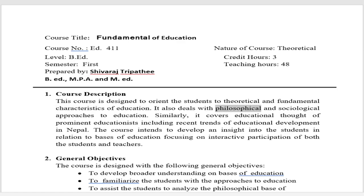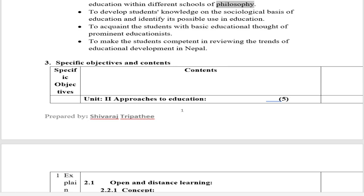The course also deals with philosophical and sociological approaches to education. Similarly, it covers educational thought of prominent educationists including recent trends of educational development in Nepal. The course intends to develop insight into students in relation to bases of education, focusing on interactive participation of both students and teachers. General objectives include: developing broader understanding on bases of education; familiarizing students with approaches to education; analyzing the philosophical base within different schools of philosophy; developing knowledge on the sociological basis of education; acquainting students with basic educational thought of prominent educationists; and making students competent in reviewing educational development trends in Nepal.